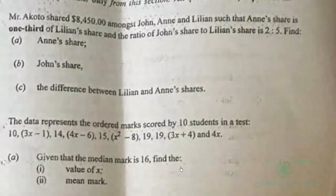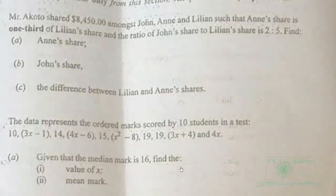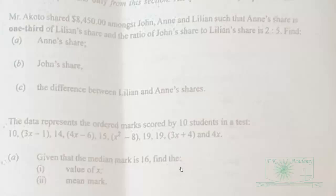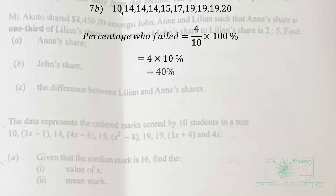On the B part, if the pass mark for the test is 15, we have to find the percentage of students who failed. We are given the marks. If the pass mark is 15, then 1, 2, 3, 4 students failed. So 4 over 10 times 100% gives us 40%. So 40% of the students failed.